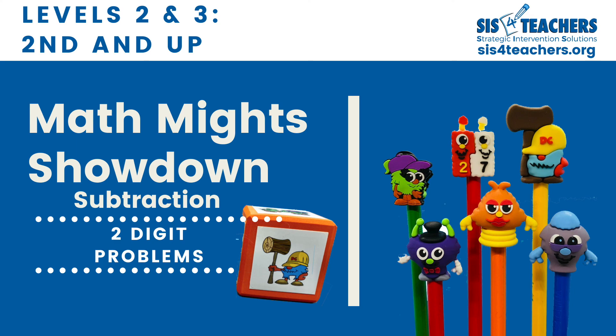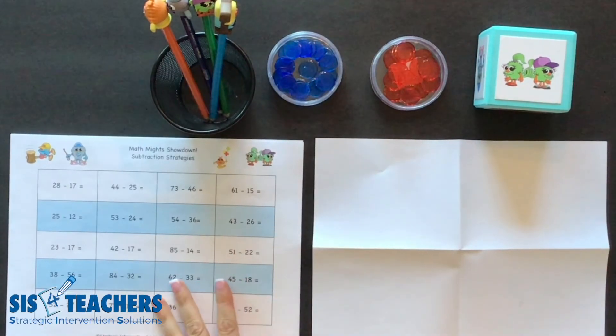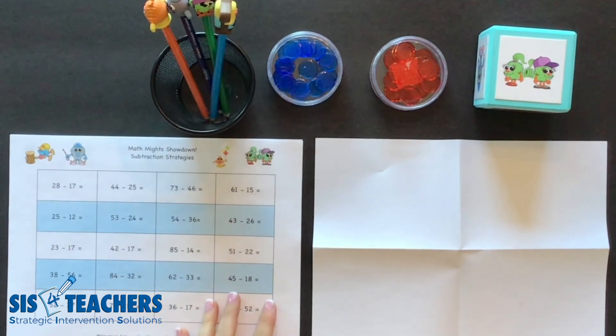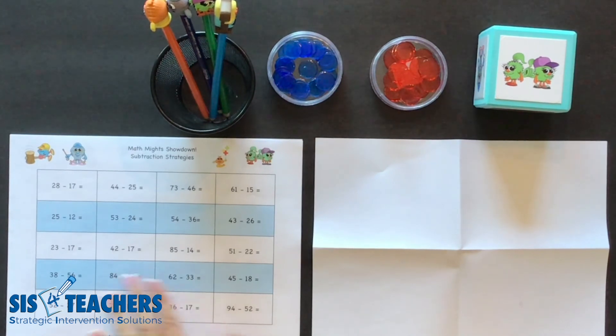Hi, this is Shannon. Thanks so much for joining us. Today we're going to show you a little bit more about how to do the MathMite Showdown subtraction strategy game. In this example, I'm going to show you a two-digit by two-digit subtraction, mostly with regrouping.